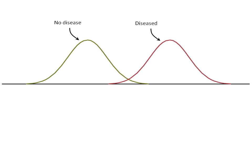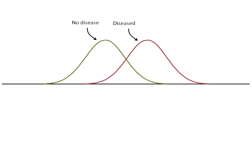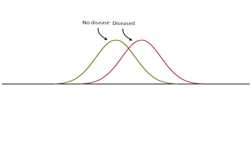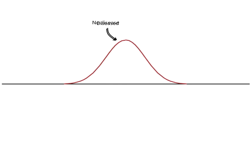As we begin to move the distributions closer and closer together, we get a region in between the two where some people who don't have the disease will have values that overlap with people who do. As we continue to push them closer, it becomes very obvious that the overlap is causing a major problem, with many more people showing up in a region shared by both populations. When the distributions overlap so much, the test is meaningless — we can't do anything with it.